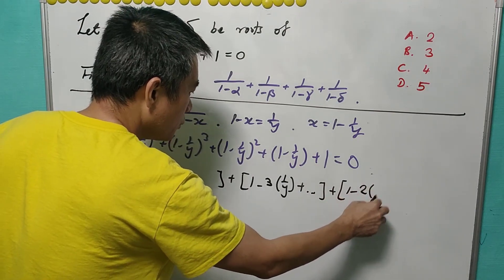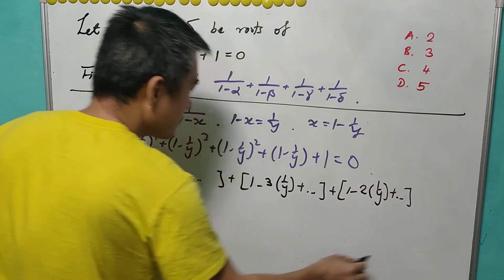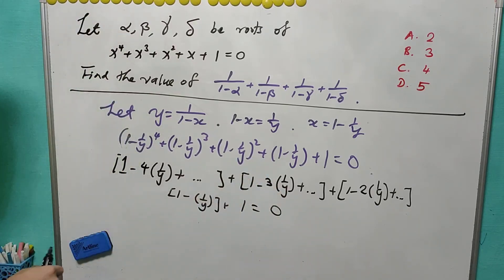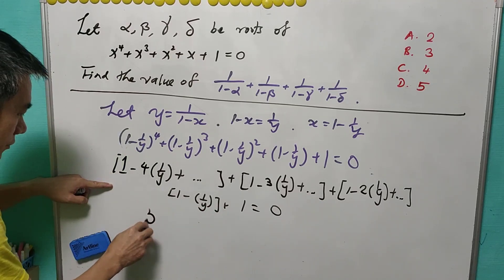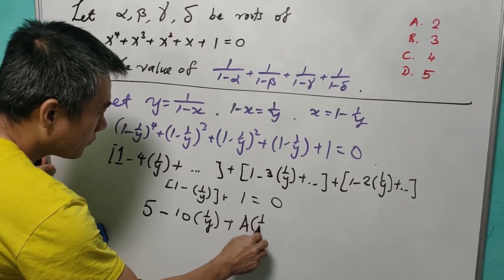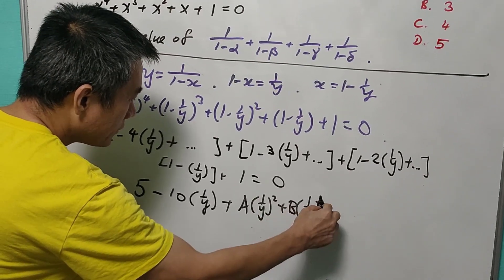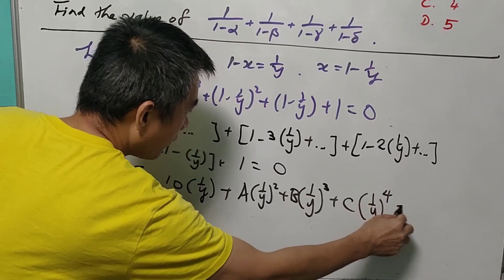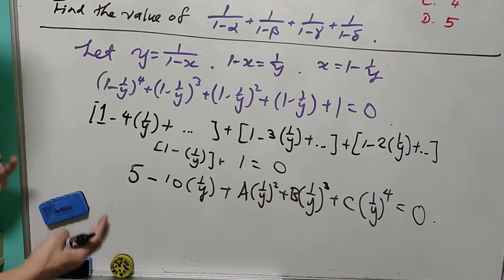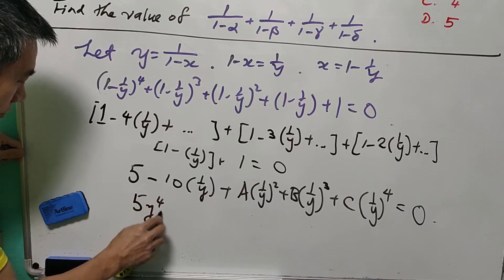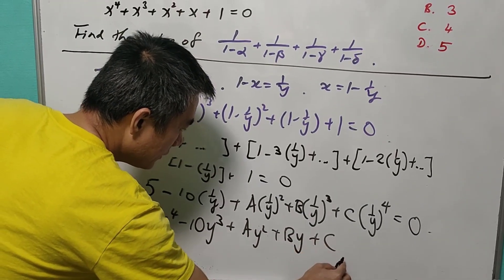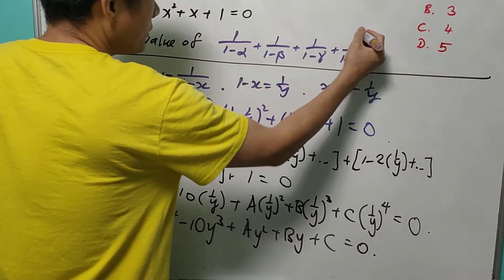Combining the constant terms gives 5, and combining the 1/y coefficients gives −10, so we have 5 − 10(1/y) + a(1/y²) + b(1/y³) + c(1/y⁴) = 0. Multiplying through by y⁴ gives 5y⁴ − 10y³ + ay² + dy + c = 0. Call this expression J.